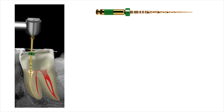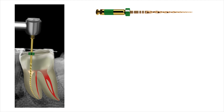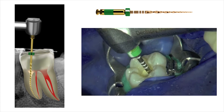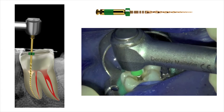A size medium Wave One Gold reciprocating file was selected for root canal preparation, taking into account the size of the root canals. The access cavity was filled with 3.5% sodium hypochlorite and here you can see the preparation of the mesiobuccal and mesiolingual root canals using the single Wave One Gold reciprocating instrument.